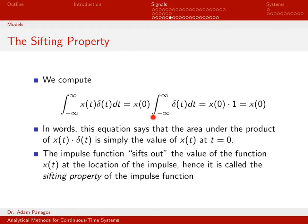We know by definition that the impulse function has an area of one. So this integral simplifies into my constant times one, which is just the constant. So what we've done is shown that this integral is just equal to the number x of zero.